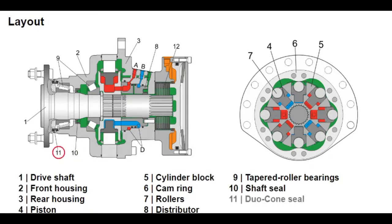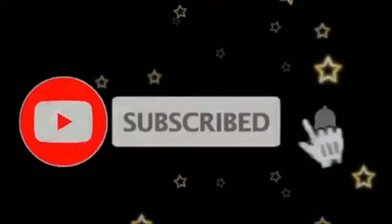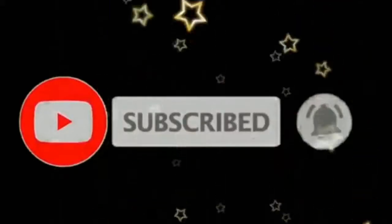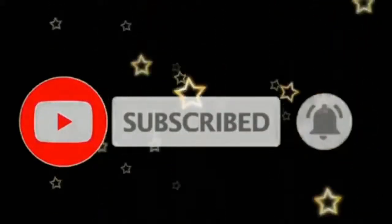The duo-cone seal (11) protects the front tapered roller bearings from dust and dirt. Adding a holding brake (12), called a multi-disc brake, provides safety for many mobile operations and ensures that the motor cannot run when the equipment is not being used.